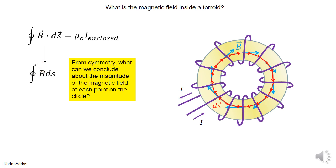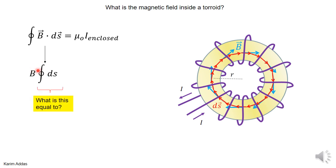So I can take B outside. When you take B outside you're left with integration of ds. What's integration of ds? It's just the total length of the circle circumference, so the circle is just 2πR. So the left hand side of Ampere's law just gives you B times 2πR.